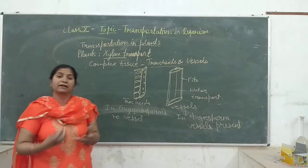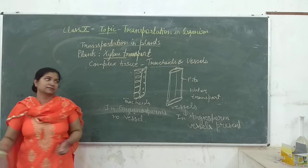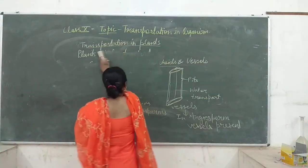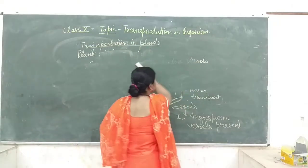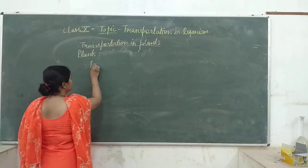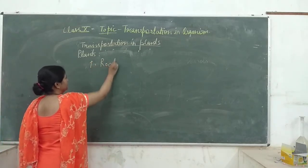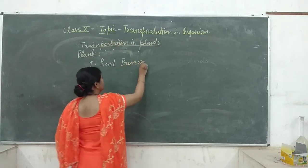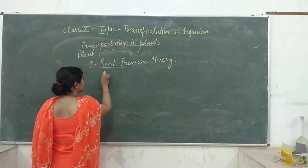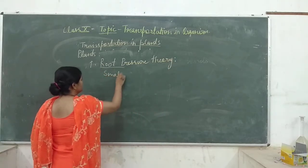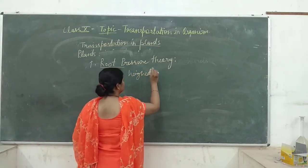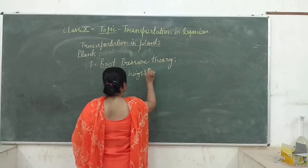Now, when you know about their structures, we will understand how they help in transport. There are basically two theories which help in understanding water transport. Number one is root pressure theory. Root pressure theory applies to smaller plants — plants of small height, like shrubs and herbs.